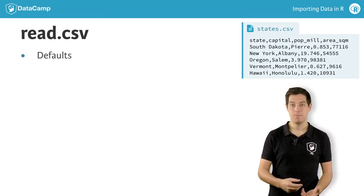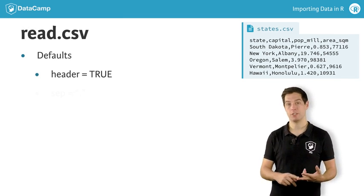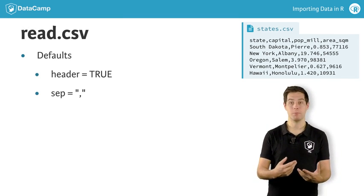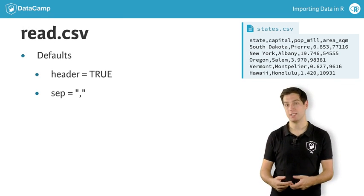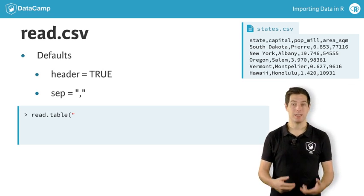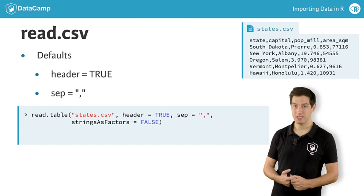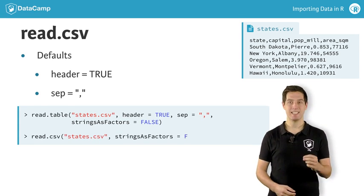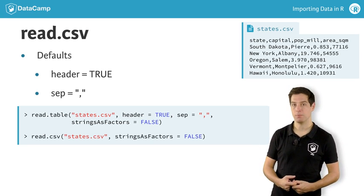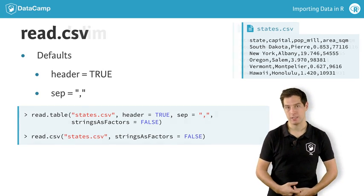For read.csv, the default for header is TRUE and for sep is a comma, so you don't have to manually specify these anymore. This means that this read.table call to import the CSV version of states is exactly the same as this read.csv call — shorter and easier to read, if you ask me.